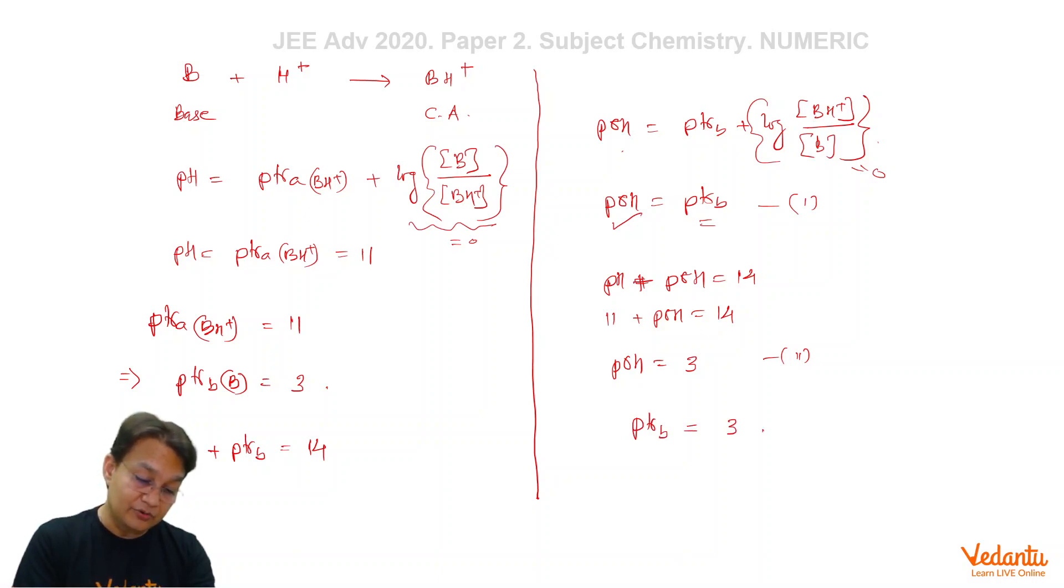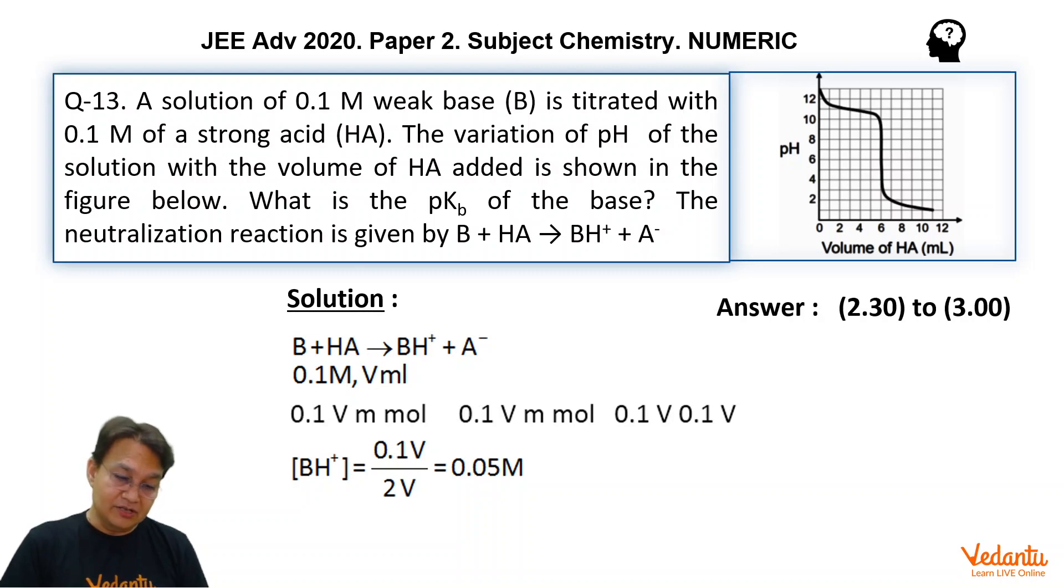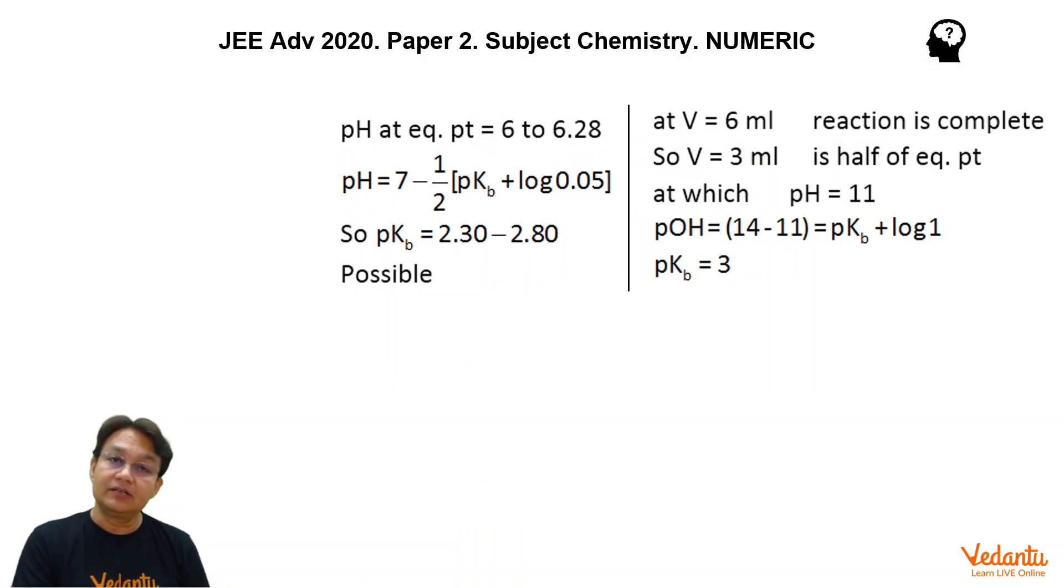So by both methods you are going to get the same answer. I think this question is going to clarify your doubts as well as give you a concept that you can use Henderson equation for calculating pH of weak acid buffer as well as weak base buffer. I hope that you liked this solution. Thanks for watching and for more detailed account of these solutions, log in to Vedantu portal. Thank you for watching.